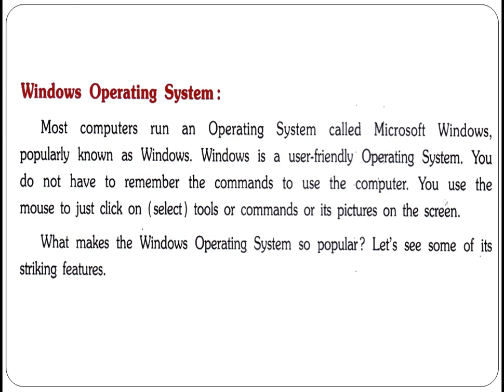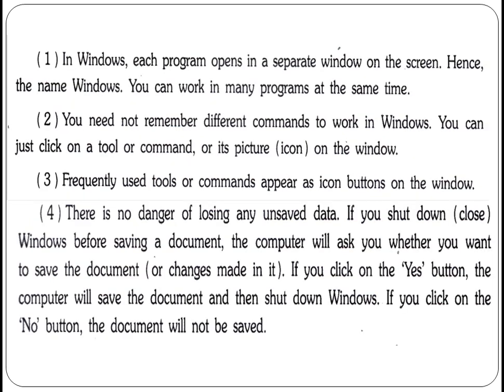So what makes Windows operating system so popular? Let's see some striking features. In Windows, each program opens in a separate window on the screen — hence the name Windows. You can work in many programs at the same time. A feature is that you can open one application, then open another application at the same time, and you can open a third or fourth as well.